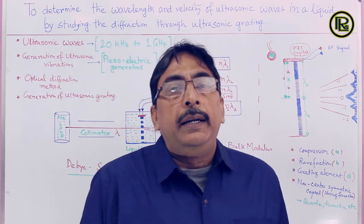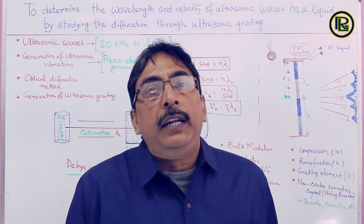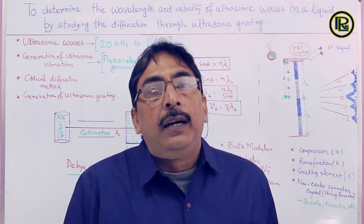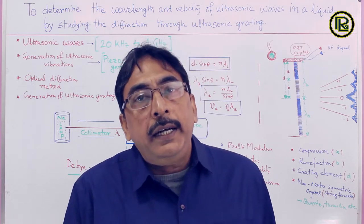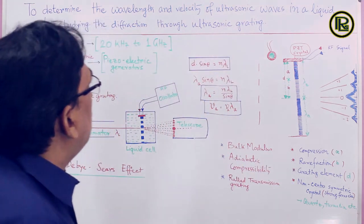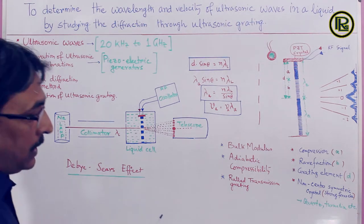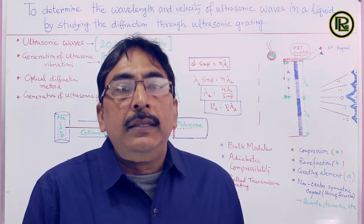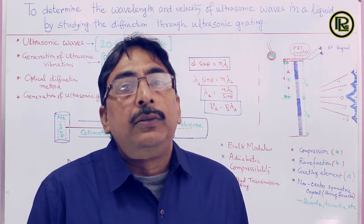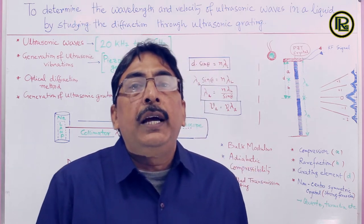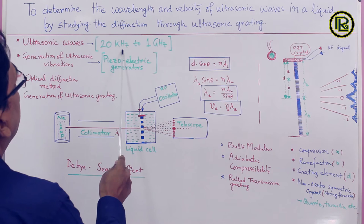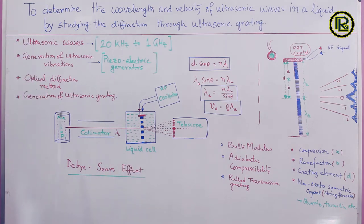Before I discuss the experimental details of this particular experiment, let me first discuss what ultrasonic waves are and how they are generated, and how the ultrasonic grating is formed with the help of ultrasonic waves. Sound waves capable of making sensation in our ear have frequency in the range 20 Hz to 20 kHz. Sound waves with frequency above that — in the range 20 kHz to 1 GHz — are called ultrasonic waves.